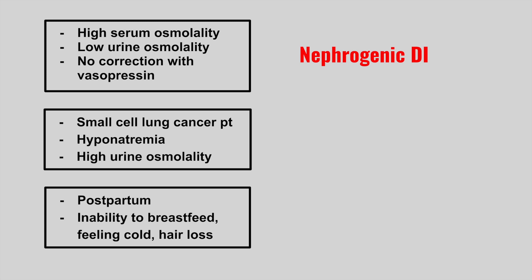The next patient has small cell lung cancer, develops hyponatremia, and a high urine osmolality. This is SIADH. Remember, small cell lung cancer can present with this ectopic ADH secretion as a paraneoplastic syndrome.